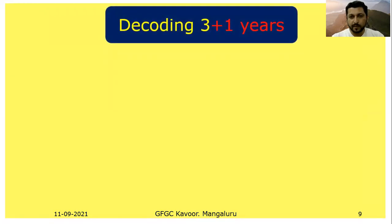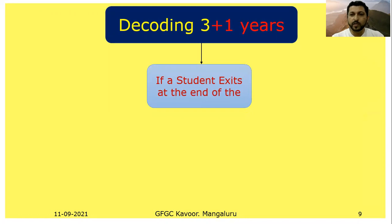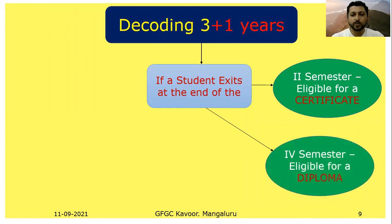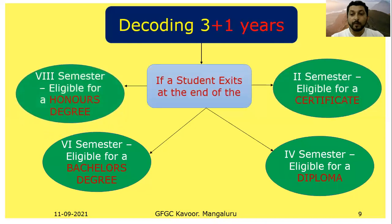Decoding three plus one years: graduation still remains a three-year course. With multiple entry and multiple exits, if a student exits after the second semester they get a certificate; after the fourth semester, a diploma; after the sixth semester, a bachelor's degree; and after completing all four years, an honors degree. At the end of the sixth semester, there will be a large majority of students moving out, especially in commerce and management, as students pursuing CA, CS, CMA, and CFA only need a bachelor's degree for direct entry.